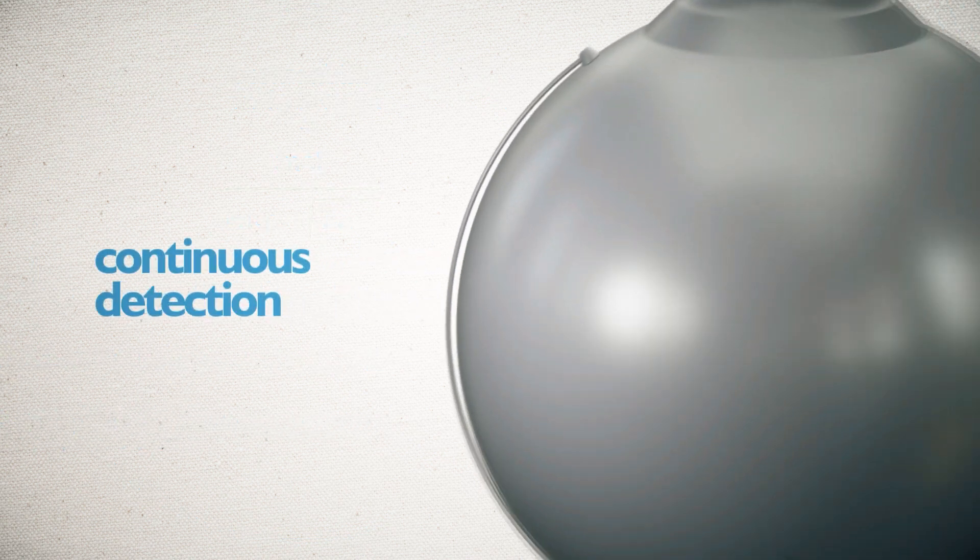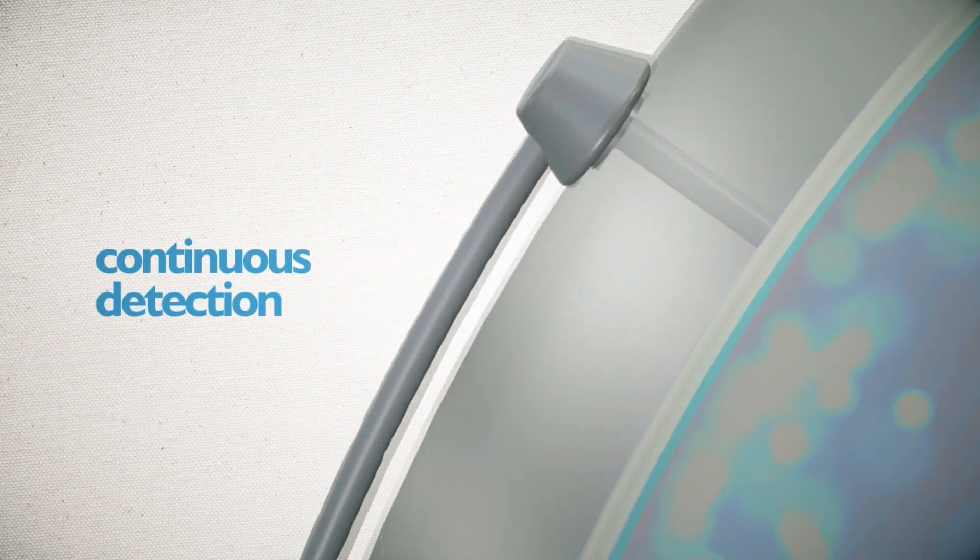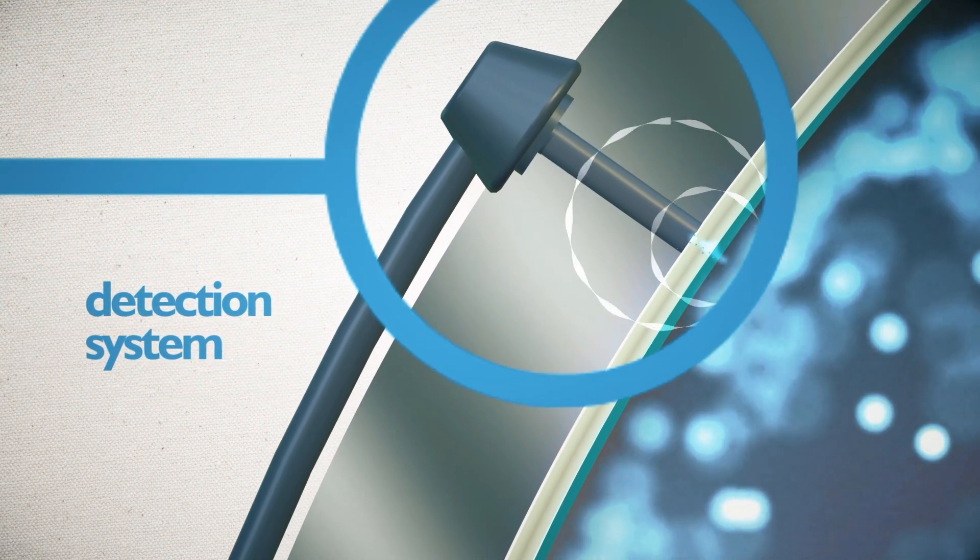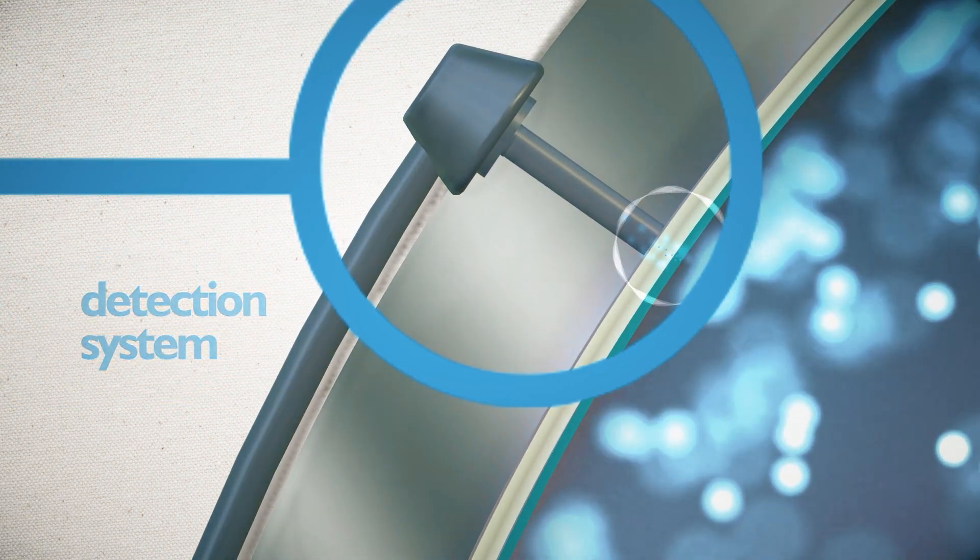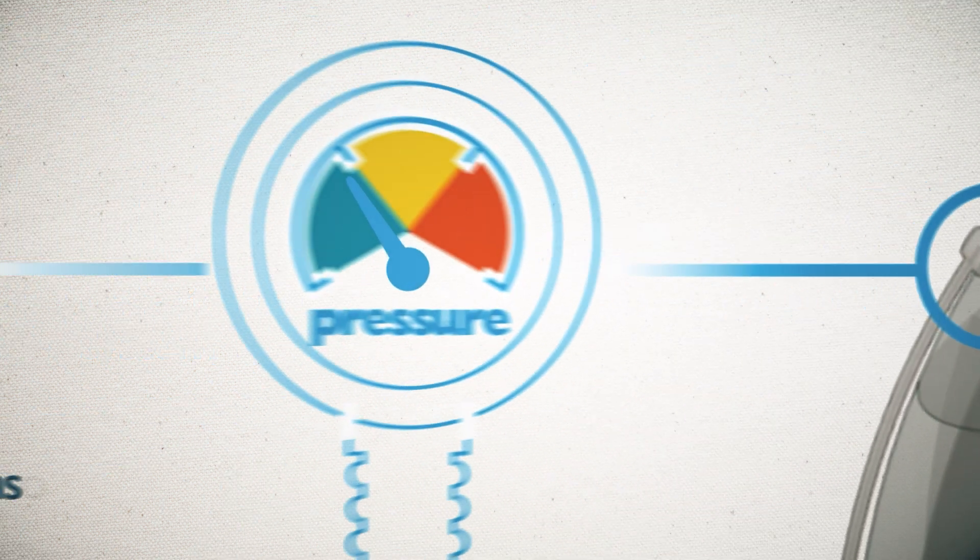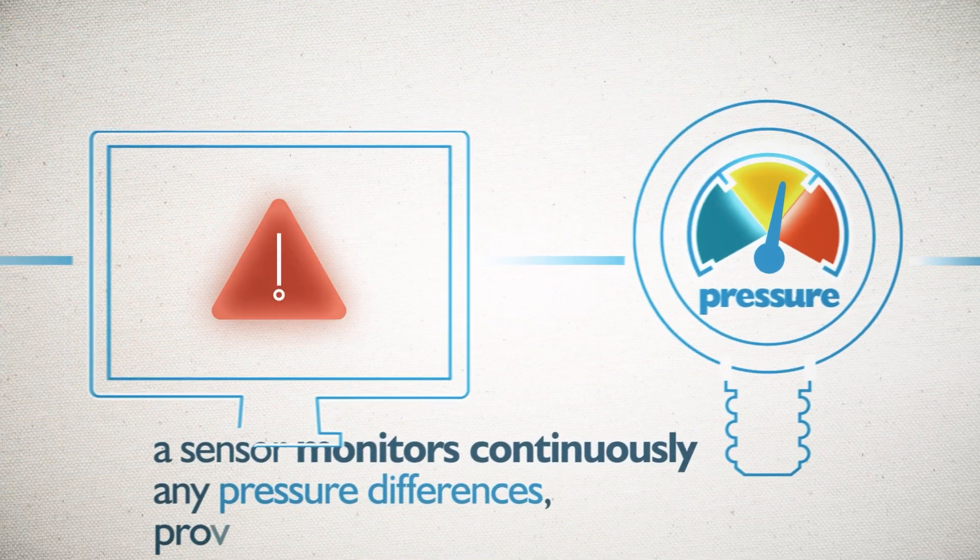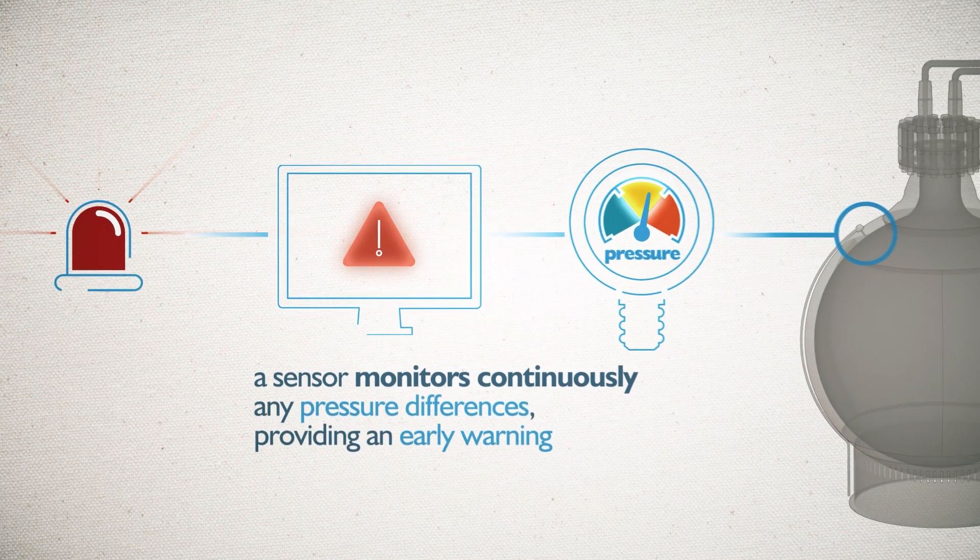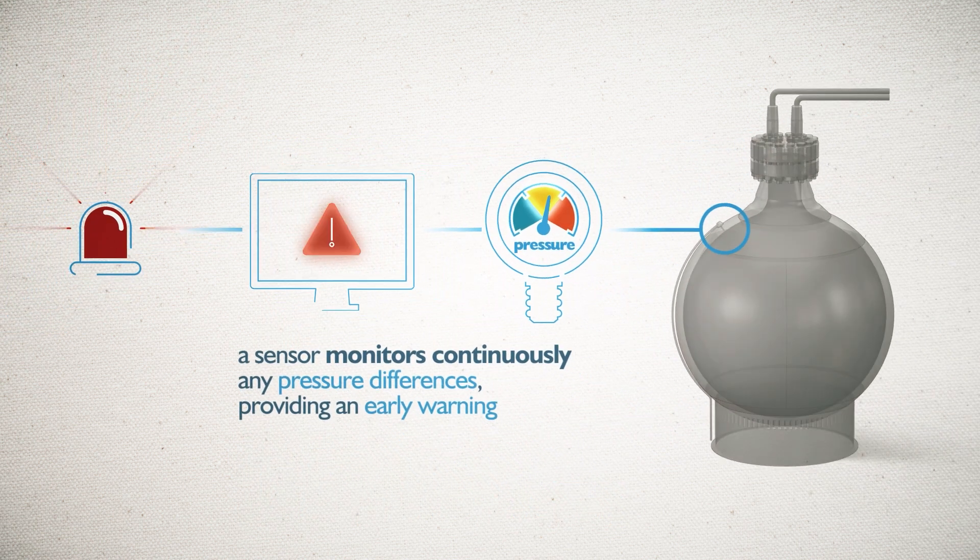To maximize the safety level even further, Walter Tosto has introduced a detection system between the steel and the aluminium layer. A sensor monitors continuously any pressure differences linked to the presence of hydrogen, providing an early warning to intervene promptly.